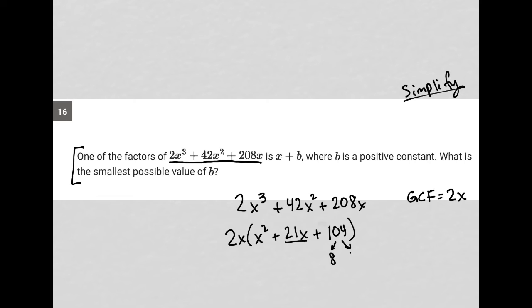So this is 8 and 13, which means this becomes 2x times x plus 8 times x plus 13. That would be the fully factored form of the polynomial.